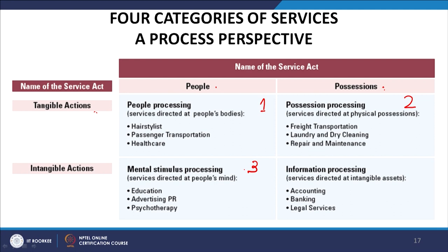In the third case, mental stimulus is being processed — intangible actions taking place on people, called mental stimulus processing. Services are directed at people's minds. Examples include education, advertising, public relations, and physiotherapy. In the fourth quadrant, information processing involves intangible actions on possessions, with examples including accounting, banking, and legal services.